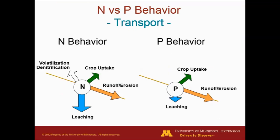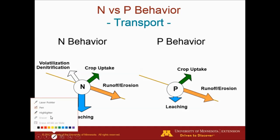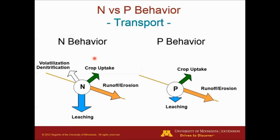Here's a summary of some of the transport factors for nitrogen and phosphorus. As we saw earlier, nitrogen is going to be taken up by the crop, or it might volatilize if we don't incorporate it, and if we over-apply manure, we might have issues with nitrogen leaching. With phosphorus, leaching is not a problem because phosphorus typically is attached to soil particles, but runoff and erosion are the main losses we need to deal with for phosphorus.